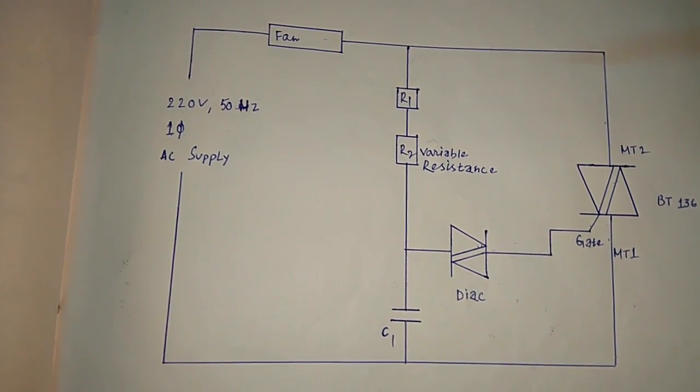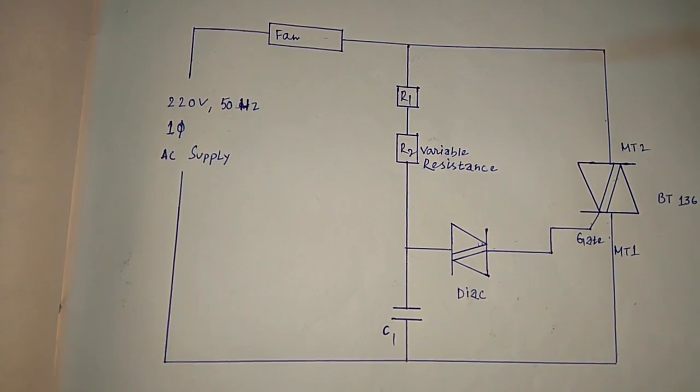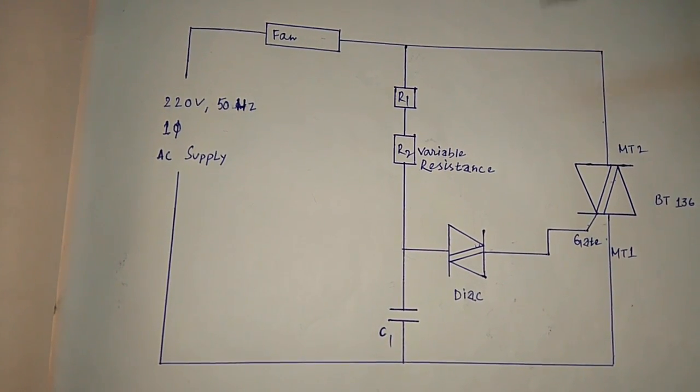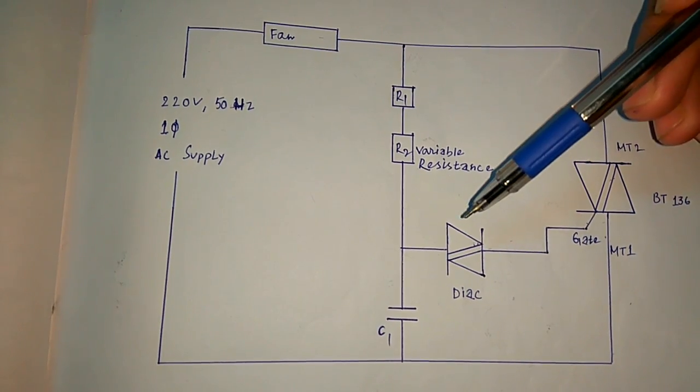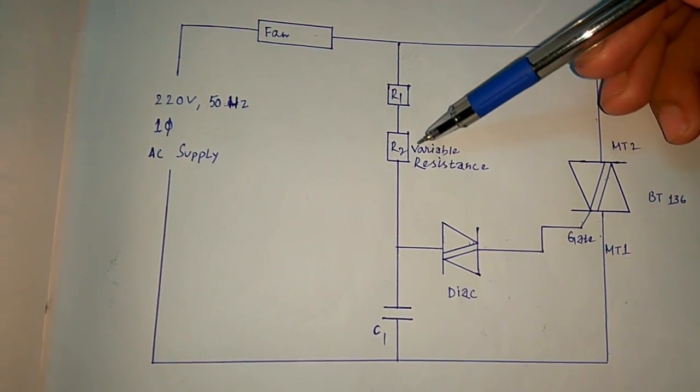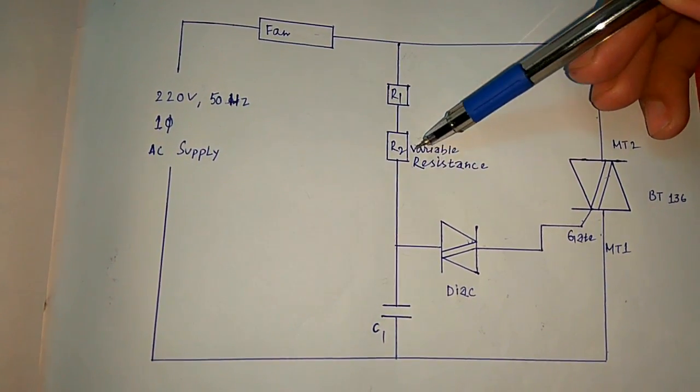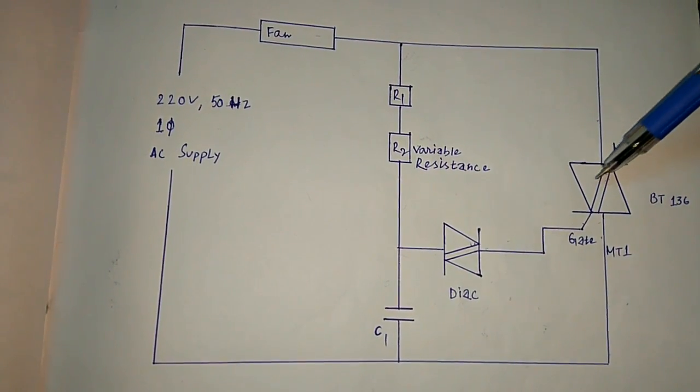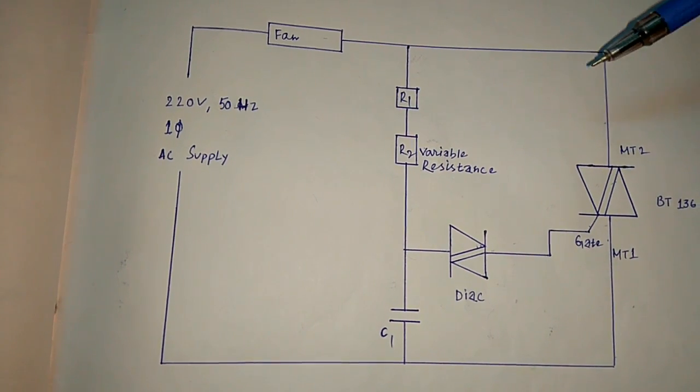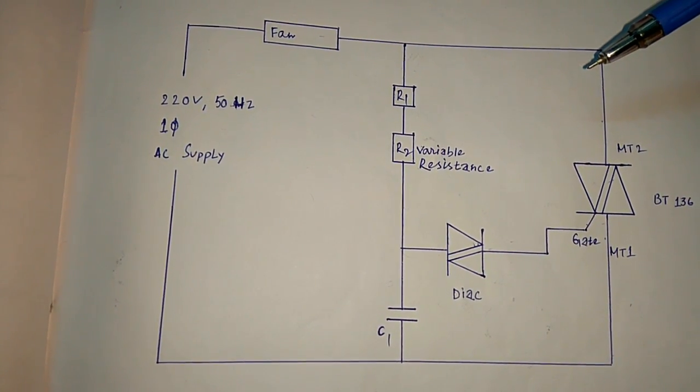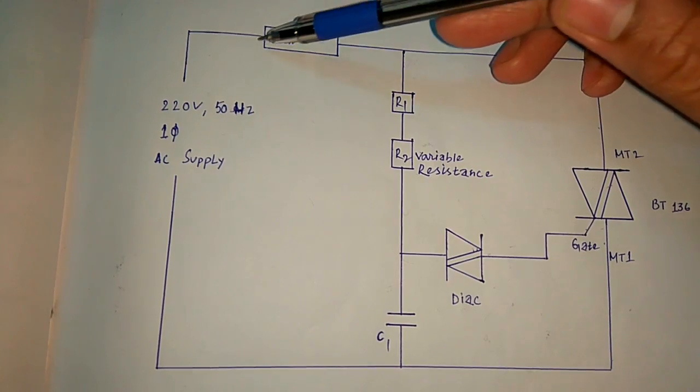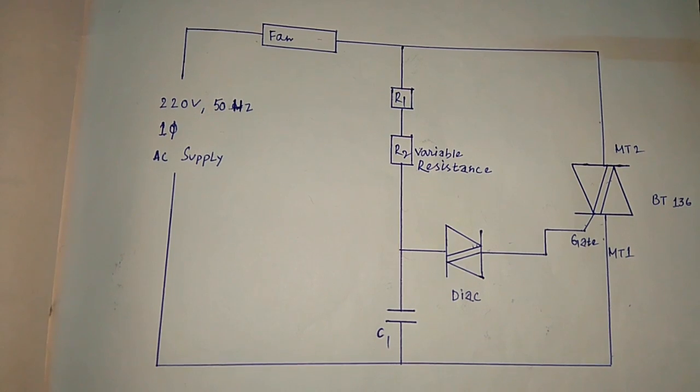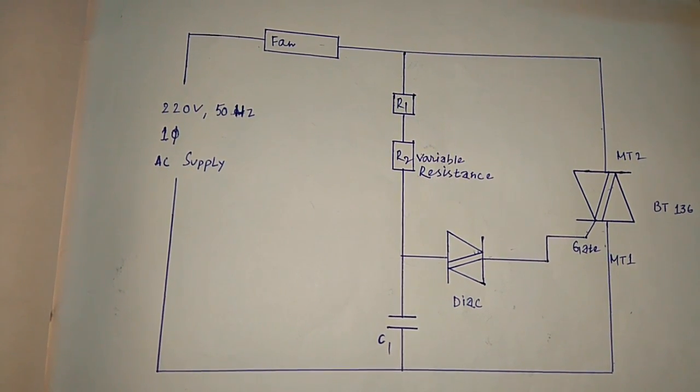As the potentiometer resistance gradually increases, the conduction angle of TRIAC will be reduced. The average power across fan or load will be varied.